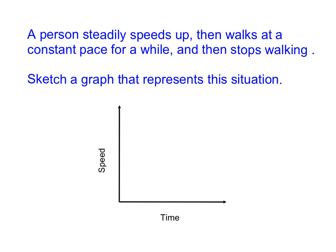Sometimes we are asked to draw our own example of a situation. In this case, a person steadily speeds up. You can see we have our graph down here. Speed is on the y-axis, Time is on the x-axis. So first thing, let's look at our key words. A person steadily speeds up. That's an increase in speed. Walks at a constant pace. That constant pace is going to be horizontal. And then stops walking.